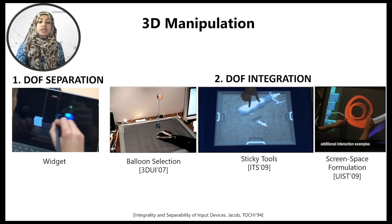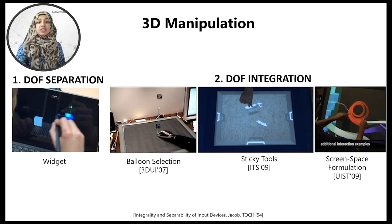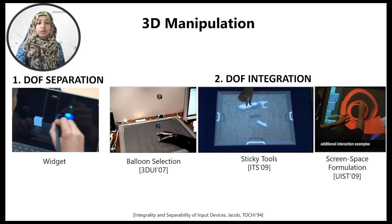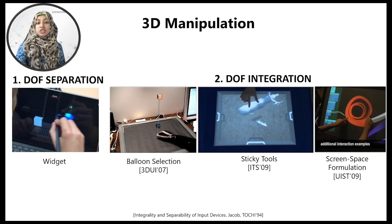On tablets, the separation approach mostly means using a widget that provides handles for each dimension, allowing precise manipulation of each dimension. Several research papers before 2010 investigated integration techniques. Many of the techniques employ multiple touch contacts — for example, dragging both fingers translates in screen space and pinching moves the object in the depth dimension. However, these are designed for large displays, while tablets have little space.